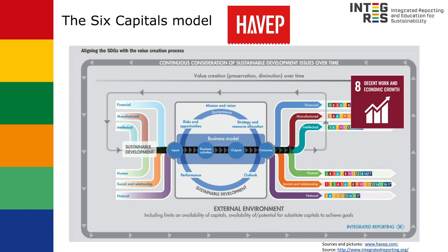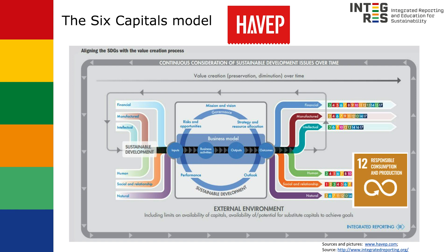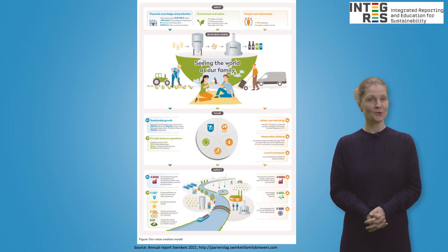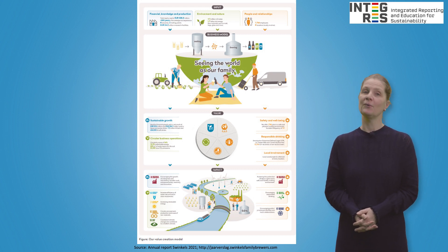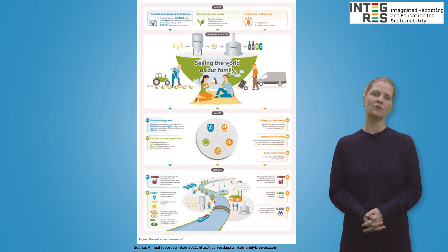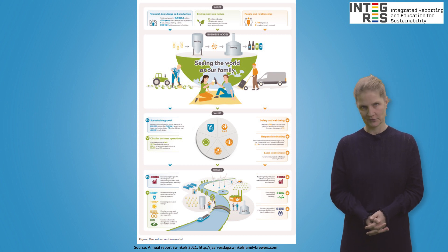The outcomes of the six capitals could be connected to the 17 SDGs. In the case of HVAP, it contributes with its business activities to SDG 8, decent work and economic growth, and SDG 12, responsible consumption and production. There are many examples of other companies that use the six capitals framework to report. A good example is the Dutch Bee Brewery Swinkels. Here you can see an overview of their value creation in their integrated reports. You can find more information on their website.